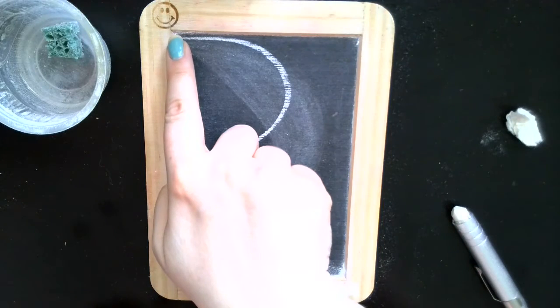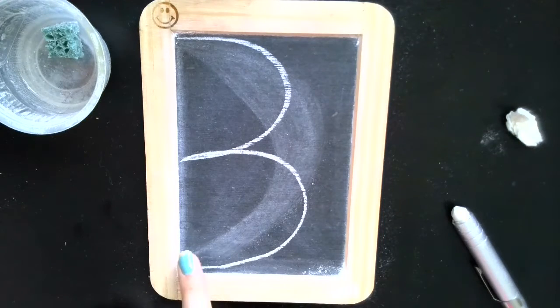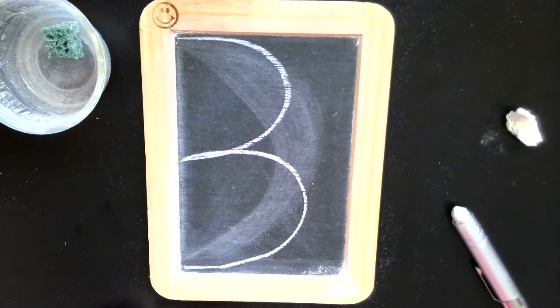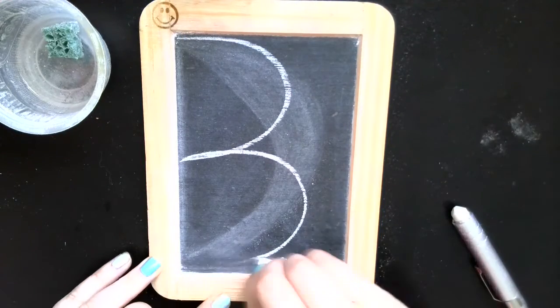So we start at the top at the happy face, we go around and stop, bounce out, and stop. This will help us so we do not draw our threes backwards. If we always start at the happy face our three cannot be backwards.